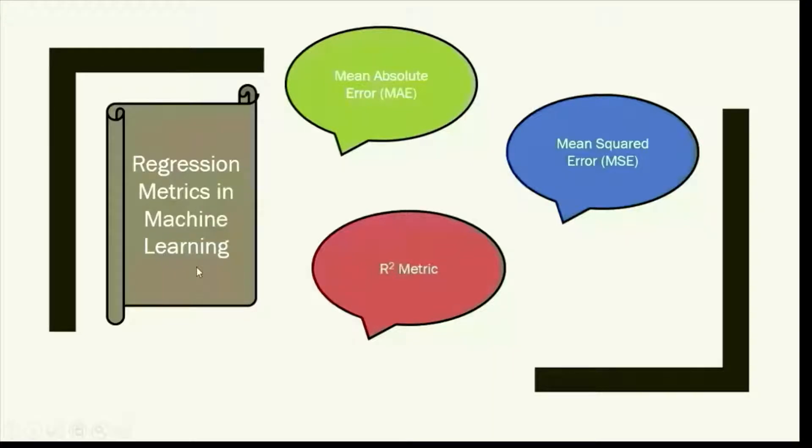Hello friends, this is yet another video on metric selection, and this is for regression metrics in machine learning. The basic three we use are Mean Absolute Error, R-squared metric, and Mean Squared Error.